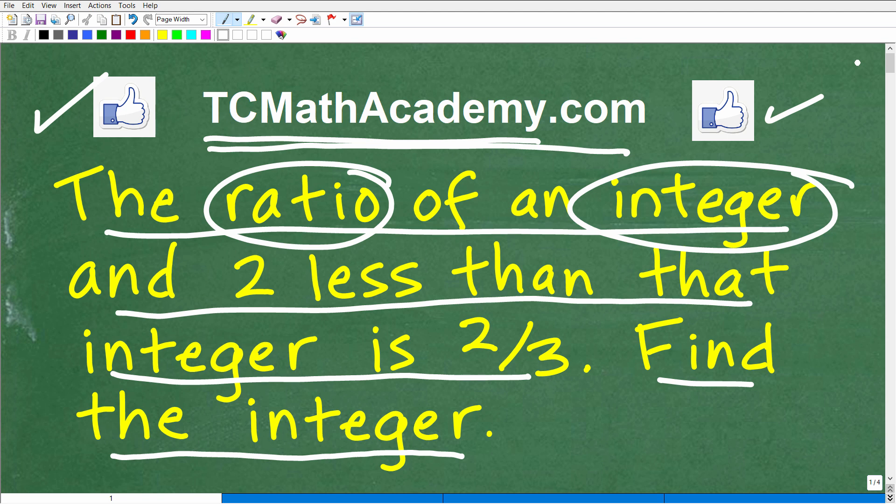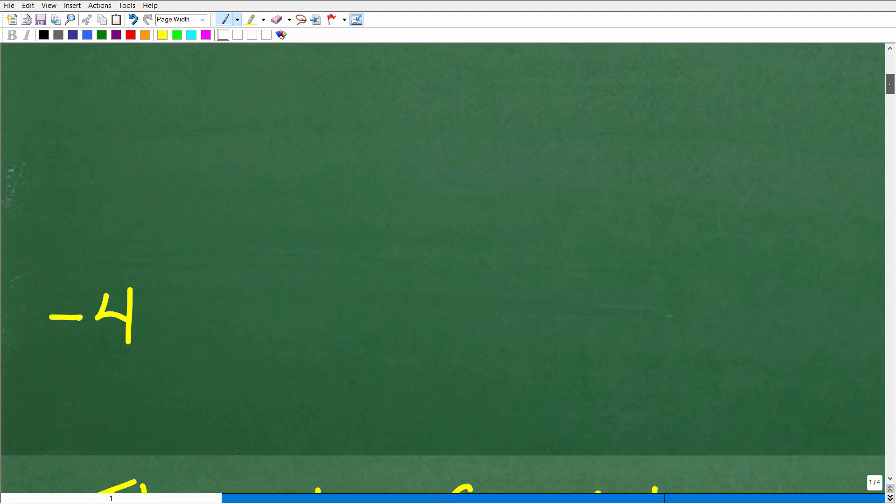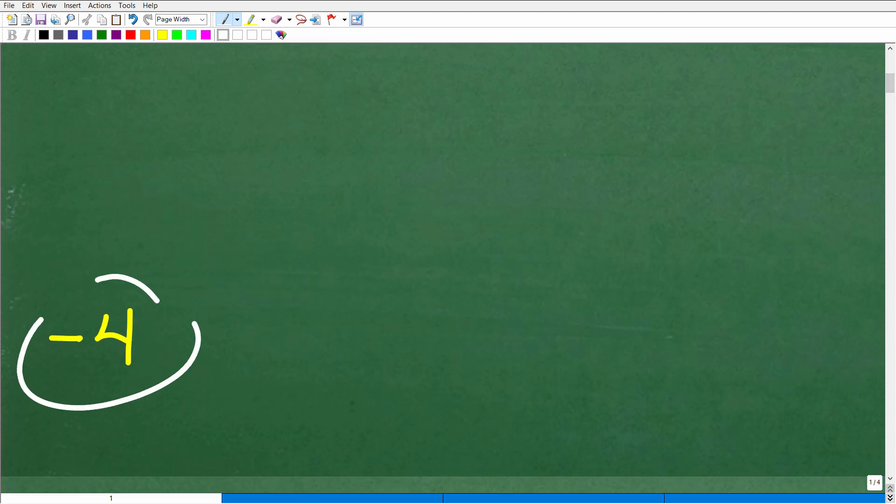Okay, so I'm going to explain what these words ratio and integers mean in just one second. But let's go ahead and answer the question. And of course, the question is find the integer in question. So what is the answer? The answer is negative four.